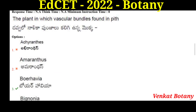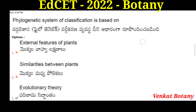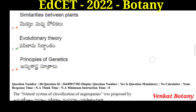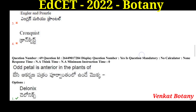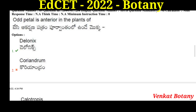The plant in which vascular bundles are found in the pith. The phylogenetic system of classification is based on evolutionary relationships. The natural system of classification of angiosperms was proposed by Bentham and Hooker. The odd petal is anterior in the plant Delonix regia.